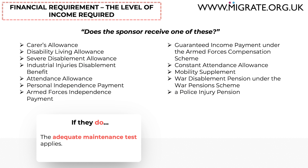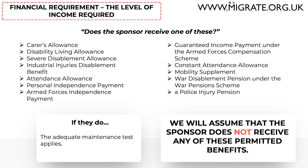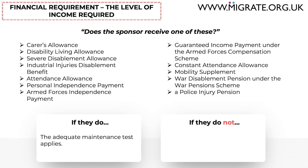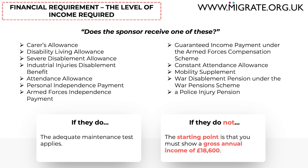Since it's only a minority of applications where the sponsor receives one of these permitted benefits, when discussing the financial requirement in this video, we will assume that the sponsor does not receive any of these. If the sponsor does not receive one of these, the starting point is that you must show that your gross annual income — the income before tax — is greater than or equal to £18,600 when you submit the online application.